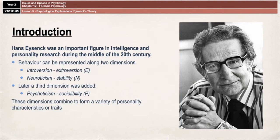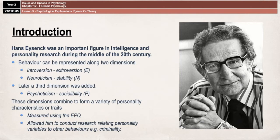Eysenck developed the EPQ — Eysenck's Personality Questionnaire — in order to measure personality types. The idea that personality can be measured is a central feature of this theory, and the test allows us to establish where along the E, N, and P dimensions people are in order to work out their personality type. You can have a go at this personality questionnaire; I've linked it in the description section below. The measurement of personality was massively important for this theory because it enabled Eysenck to conduct research comparing personality variables to other behaviours, such as criminality, which then allowed him to come up with his theory of the criminal personality.